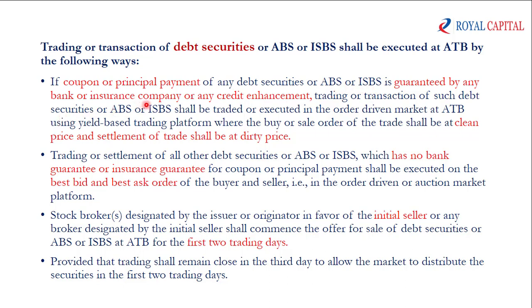The bank, insurance company, or one-on-one credit enhancement grant. The coupon or principal amount is the material amount for the company. Coupon payment is the interest of the company, which is the yield-based trading platform, with the price of the company.